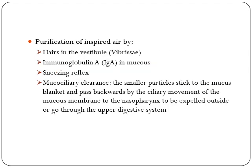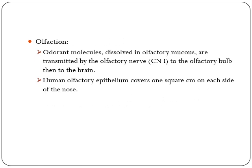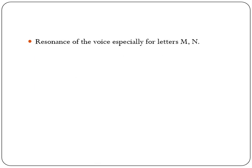Purification of inspired air is achieved by hair in the vestibule called vibrissae, immunoglobulin A in the mucus, the sneezing reflex, and mucociliary clearance. Olfaction: the odorant molecules dissolved in the olfactory mucosa are transmitted by the olfactory nerve to the olfactory bulb then to the brain. The olfactory epithelium covers one square centimeter on each side of the nose. Resonance of voice is especially important for the nasal consonants M, N, and NG.